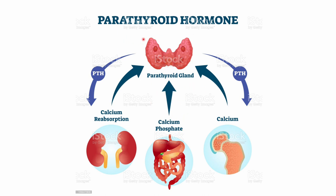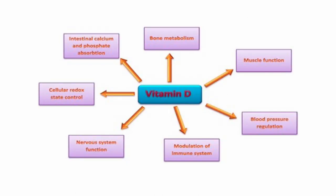The opposite is true for parathyroid hormone. If you're going to enhance the absorption of calcium from the intestines, blood calcium level will increase. If you're going to inhibit the excretion of calcium from the kidneys, blood calcium levels will increase. If you're going to increase osteoclast activity — breaking down bone matrix to liberate calcium — blood calcium levels will increase. These are the effects of parathormone, which is found on the posterior aspect of the thyroid gland in these four tiny glands.